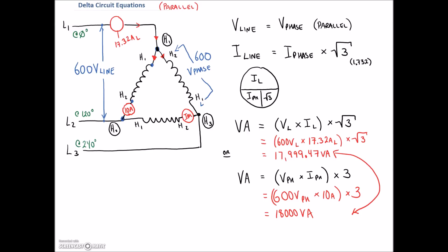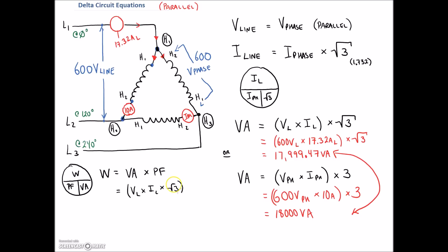When we get into wattage, the power factor equation still holds true: power factor equals watts over VA. So total watts equals VA times power factor. Using line values, that's V line times I line times root three, multiplied by the power factor. Or using phase values, it's V phase times I phase times three, multiplied by the power factor. That gives you the amount of wattage in the circuit.